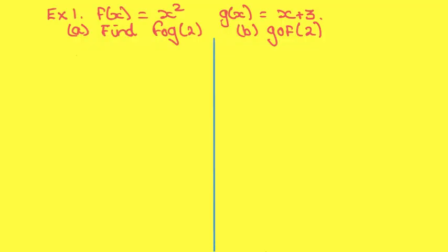Example 1. If f of x equals x squared and g of x equals x plus 3. Part a: find f of g of 2. So first do g of 2, which equals 2 plus 3, so g of 2 is equal to 5.